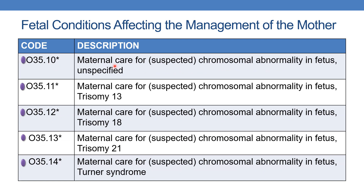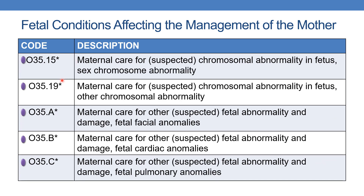O35.10 is for maternal care for chromosomal abnormality in fetus, unspecified. O35.11 is for trisomy 13. O35.12 is for trisomy 18. O35.13 is for trisomy 21. O35.14 is for Turner syndrome. O35.15 is for sex chromosome abnormality. O35.19 is for other chromosomal abnormality.